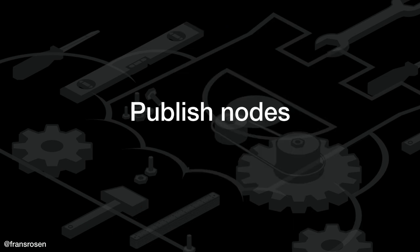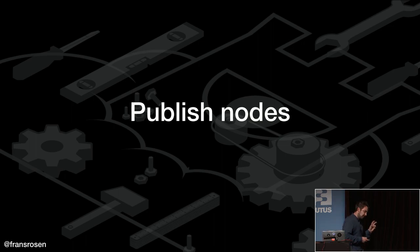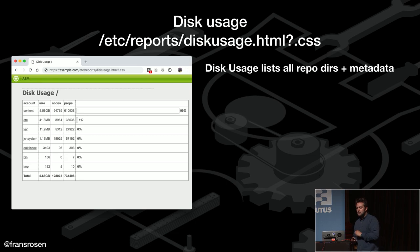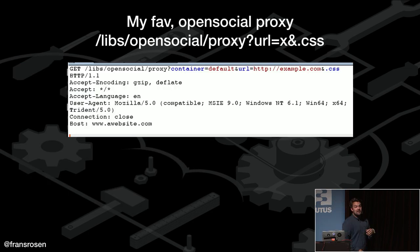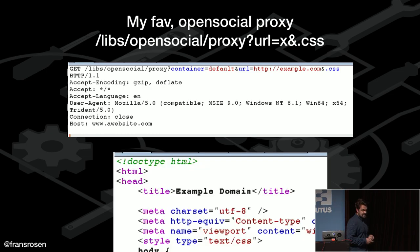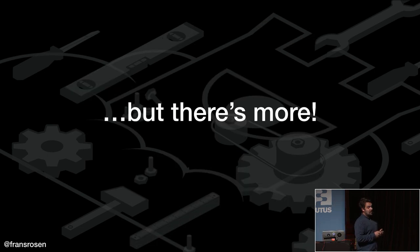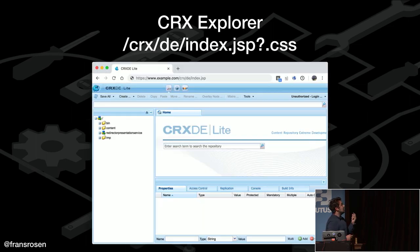So once inside the publisher nodes, what can we find? Peter talks about some fun endpoints. There's one called disk usage which basically gives you a file listing of your whole repository — you just go to it with '?.css' and you can see everything. There's also one called proxy where you just provide a URL and it serves the content from the server — this is SSRF by design. You can surf into their internal network. Another thing you can reach is the CRX Explorer.